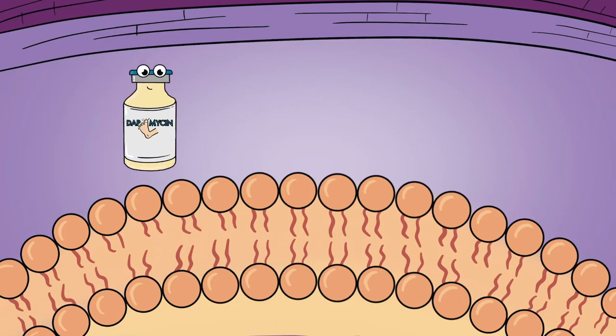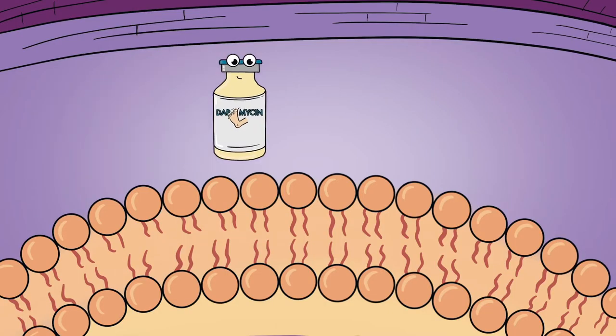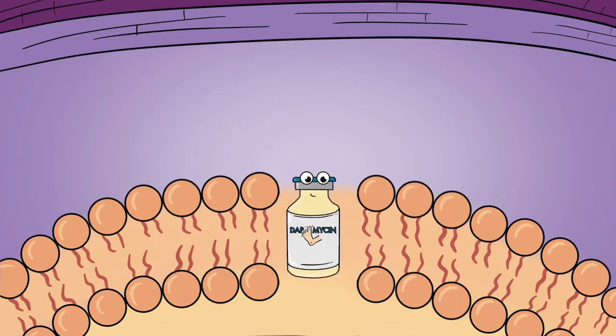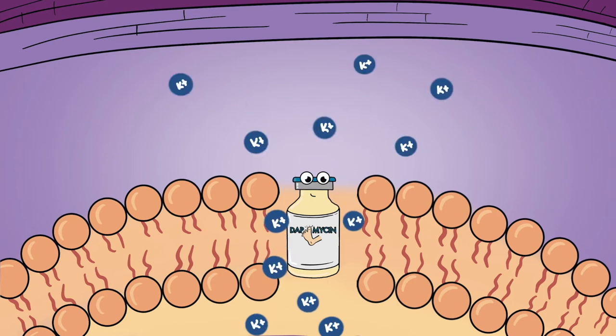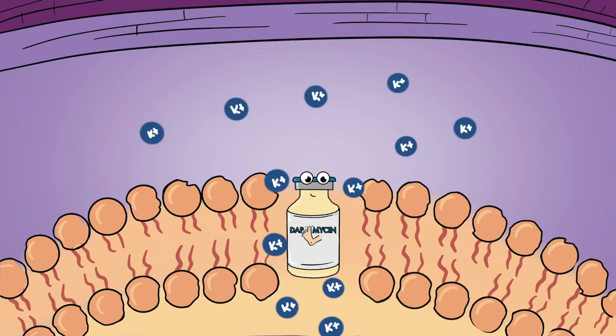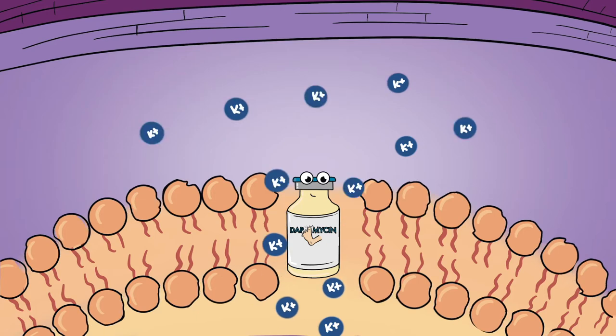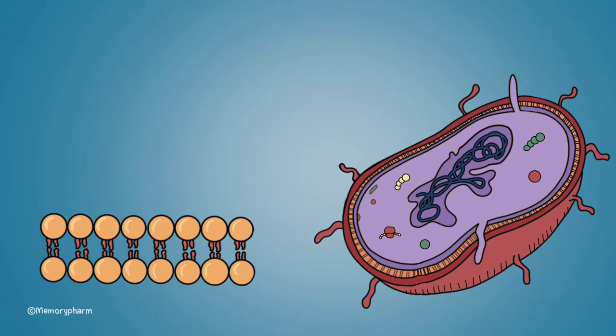Daptomycin works by inserting itself into the cytoplasmic membrane of gram-positive bacteria, weakening the membrane and causing cations to leak out of the cytoplasm, stopping processes that are essential to the life of the bacterium and therefore killing it.